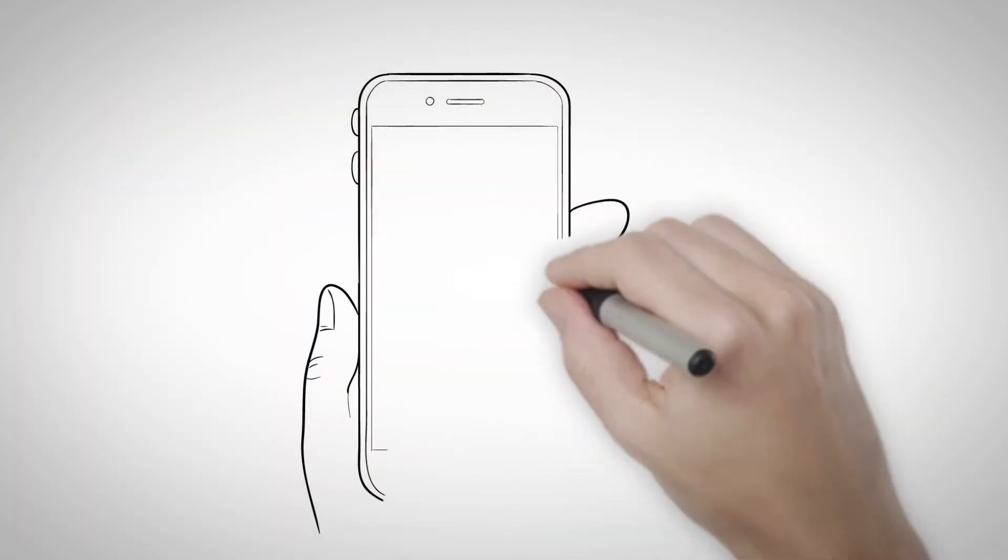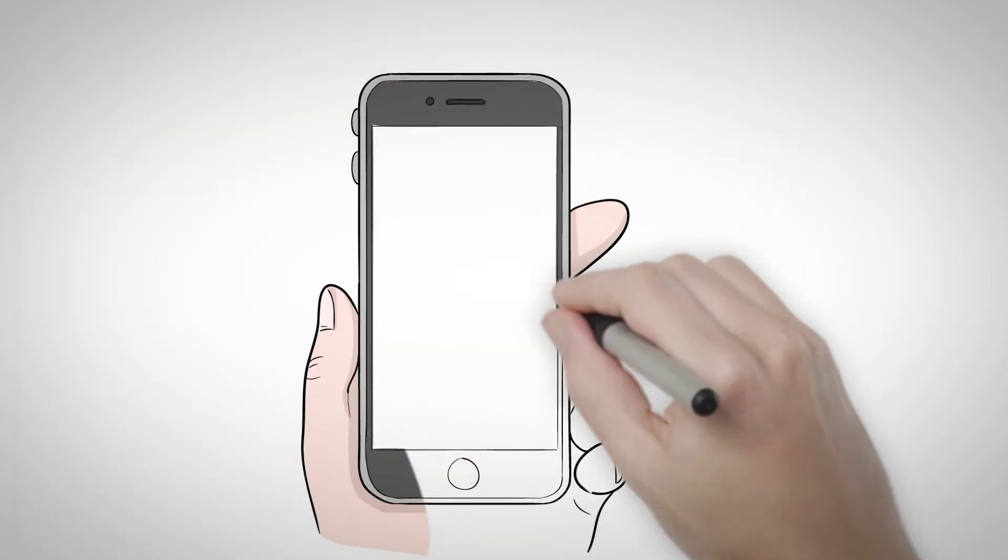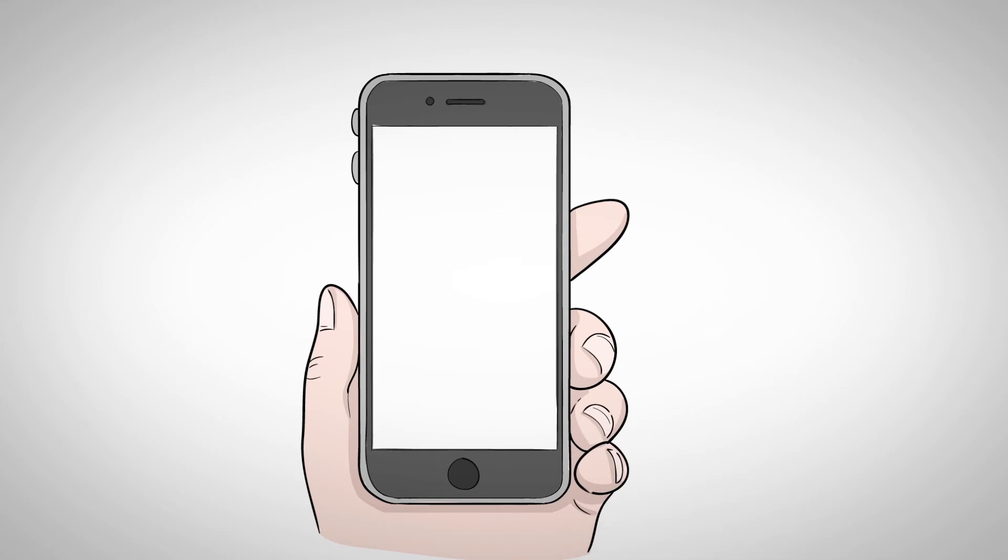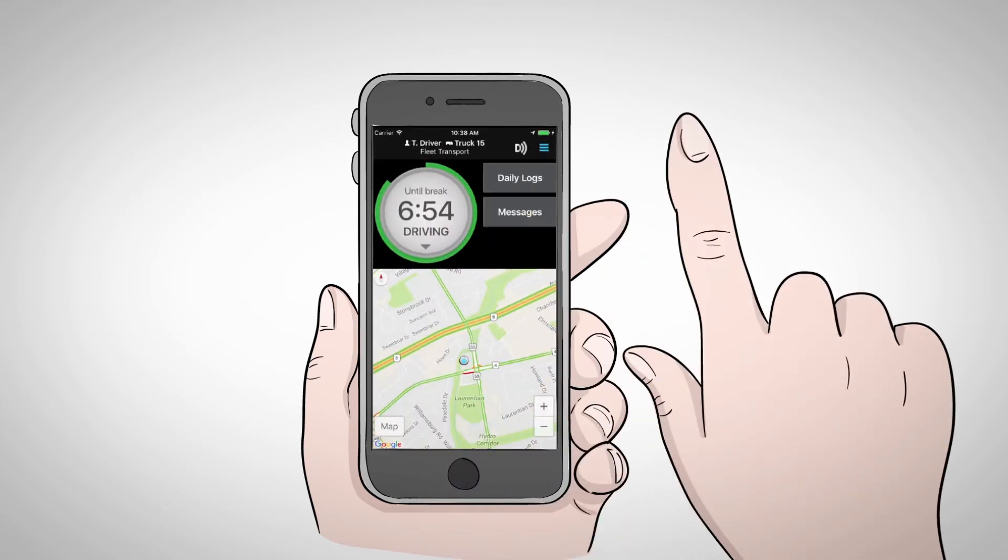Jake downloaded the free BigRoad mobile app on his phone and began using it to complete his logs. He saw an immediate improvement. No more form and manner errors or unnecessary violations.